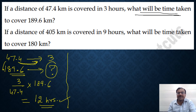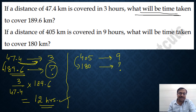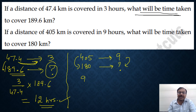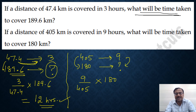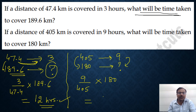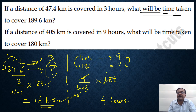Another similar one: 405 kilometers covered in 9 hours, so 180 kilometers covered in how many hours? The distance has decreased, so the time will also decrease — an important checkpoint to verify your answer. Take 405 to the denominator of 9, then multiply by 180. The calculation is straightforward: 9 cancels into 405 exactly 45 times, and 45 cancels 180 exactly 4 times. So the answer is exactly 4 hours.